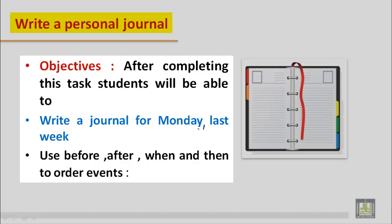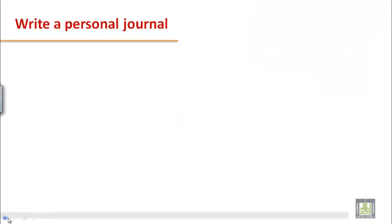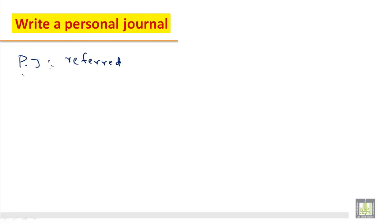First of all, what is a journal? A journal is a daily record of events or businesses. A personal journal is also referred to as a diary. Some people love to write about their daily activities — how they spend the day. That is called a personal journal.